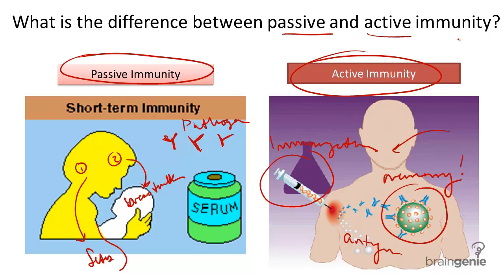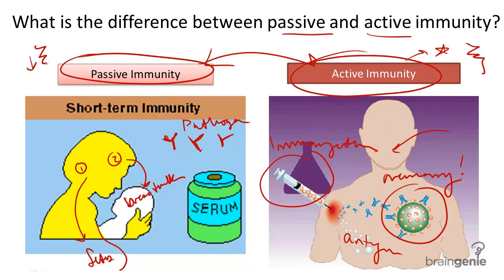So in summary, the difference between passive and active immunity can be compared to the difference between actively creating your own memory cells, which takes a lot of energy, or passively receiving the antibodies that have already been created, which takes less energy.